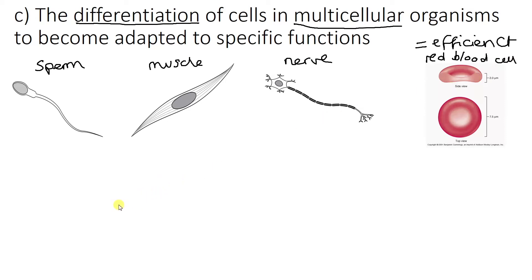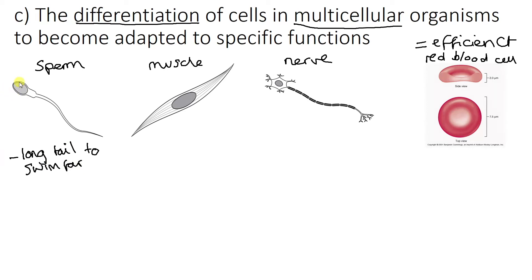They might ask you about the different adaptations that these cells have to perform their functions, and it is useful to know. So with this sperm cell, one of the first adaptations that it has is this big long tail. The function of this is basically to swim fast, because sperm cells have to travel into the uterus of females and get to the egg, so they have to swim far. Another thing that they have is this narrowing of the head at the top — a narrow head — and this is to make it easier to burrow into the egg. In reproductive science you will learn that the sperm cells have to burrow into the egg to actually fertilise it.